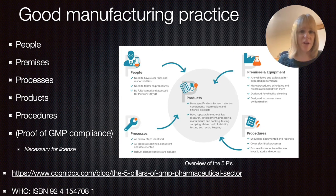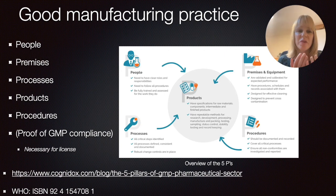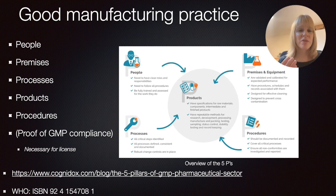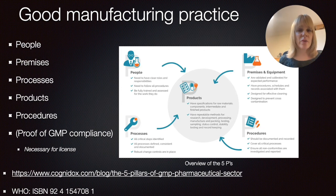Around the products, there are other things that come in, such as the people you're working with. When it comes to people, you need to make sure they have clear and defined responsibilities, that they follow the procedures, and that they've received the training so they are aware of what those procedures are. When it comes to processes, you need to know what the critical steps are, ensure repeatability, and have controls in place for when you need to implement changes. When it comes to premises and equipment, everything needs to be regularly calibrated and well maintained — designed so they can easily be cleaned to avoid cross-contamination, which can have serious safety implications.